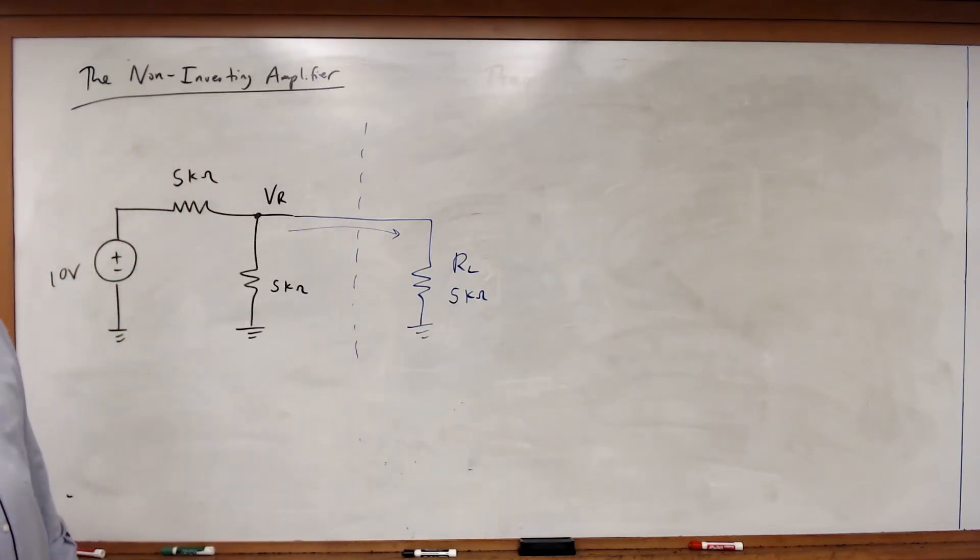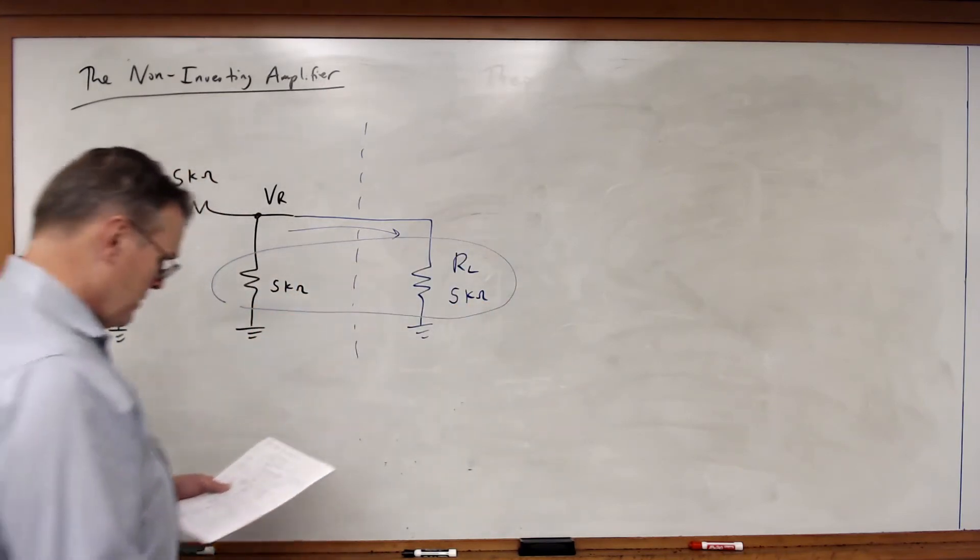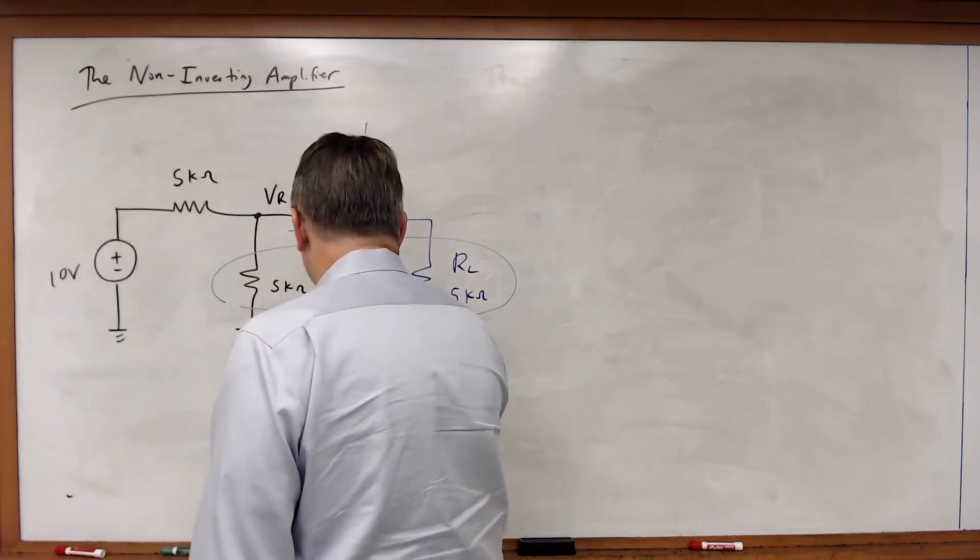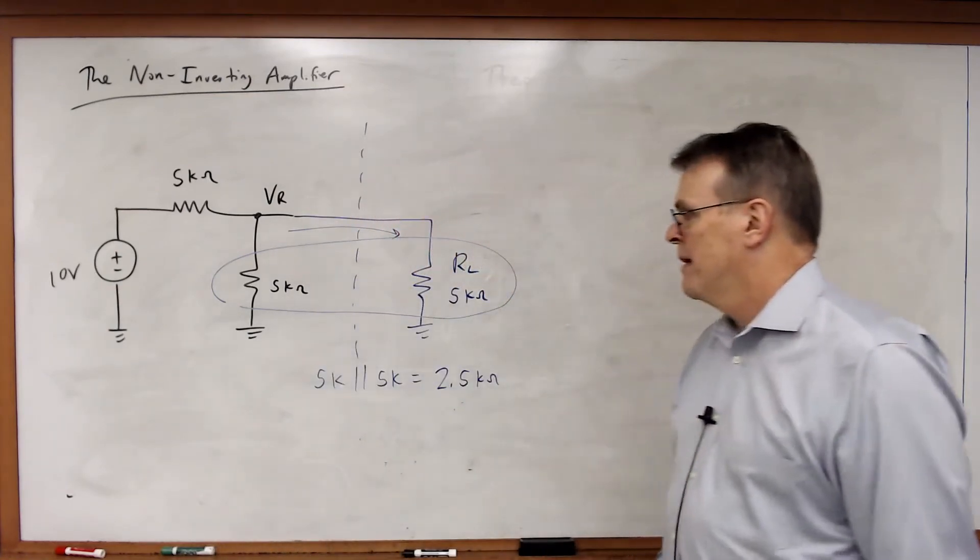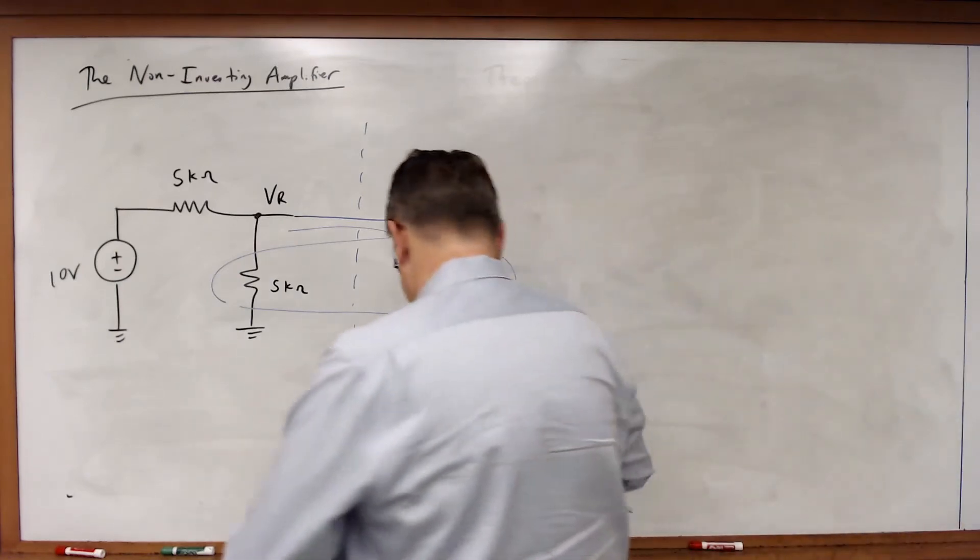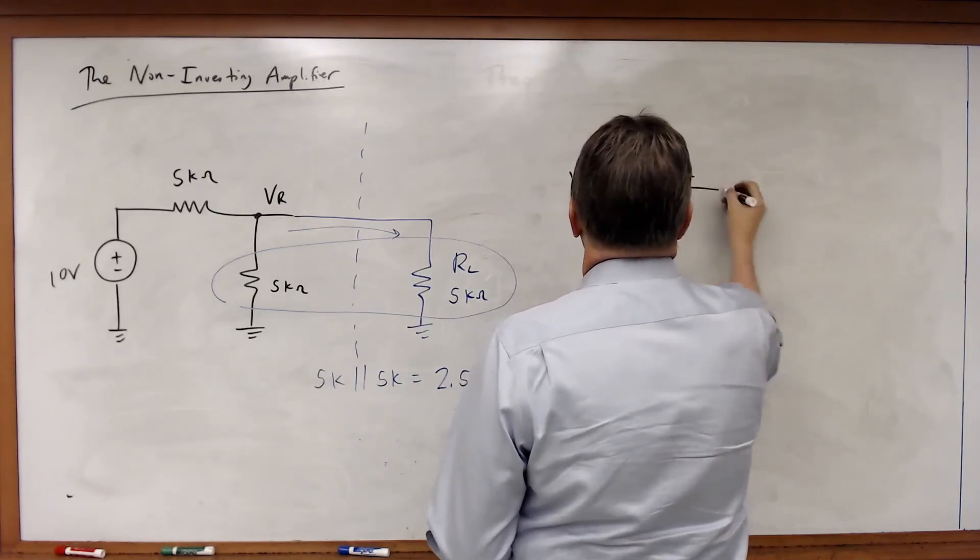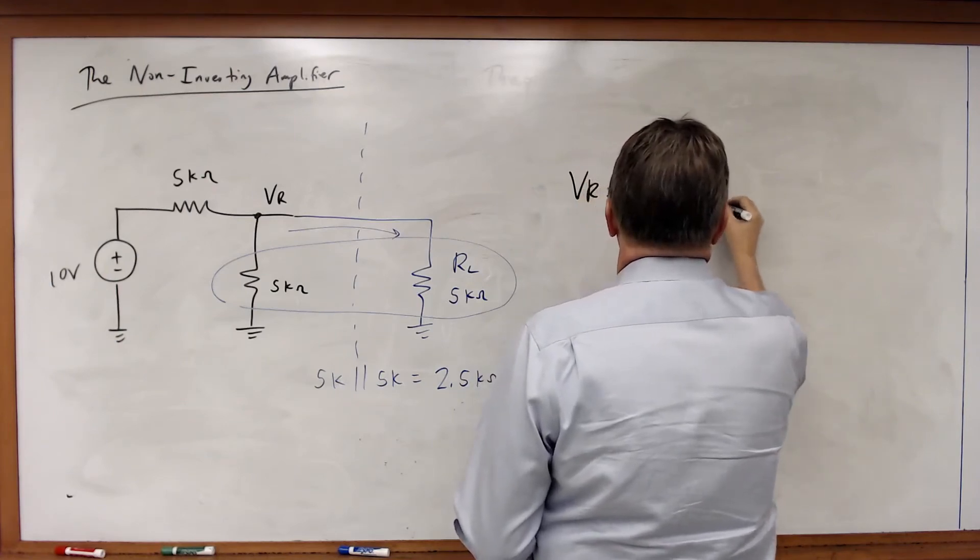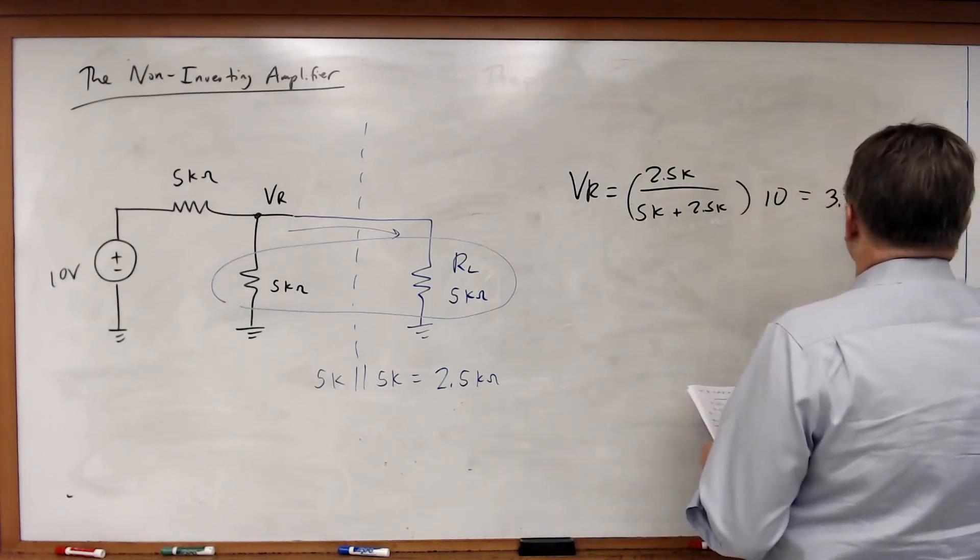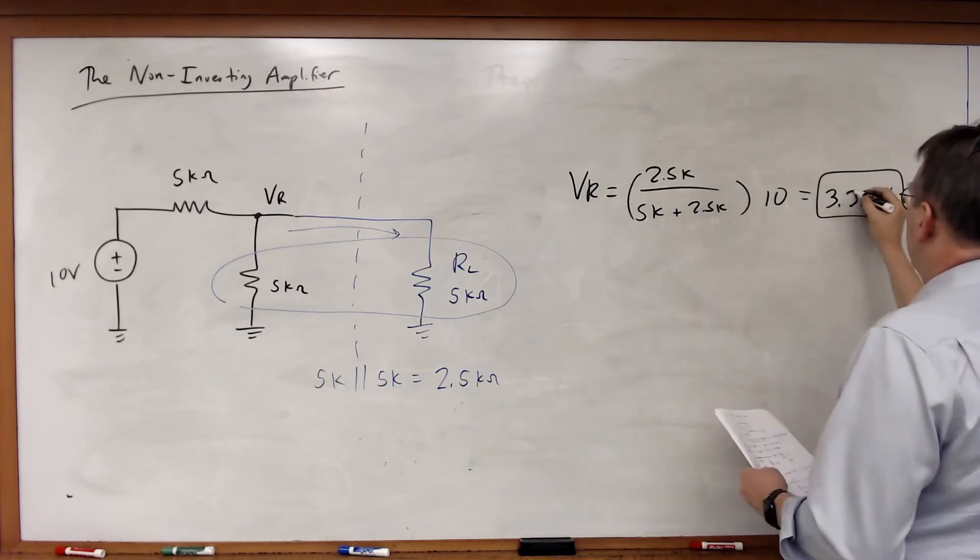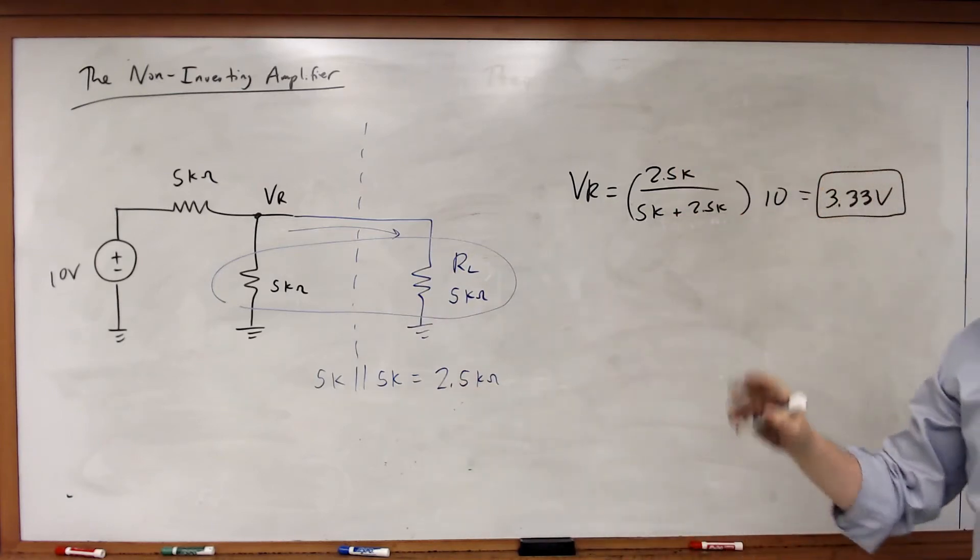The KCL equation changes. In fact, what do I have? These two resistors are in parallel. So in this case, what I've got is 5K in parallel with 5K is equal to 2.5 kilo ohms. So now if I calculate VR, VR is now equal to 2.5K divided by 5K plus 2.5K times 10 is equal to 3.33 volts. So my desired 5 volts has just dropped down to 3.3 volts due to what we call the loading effect.